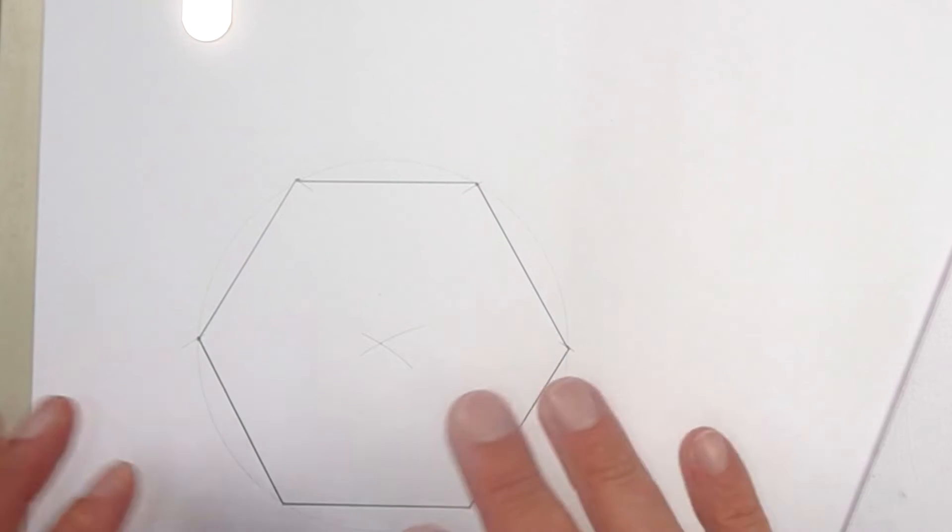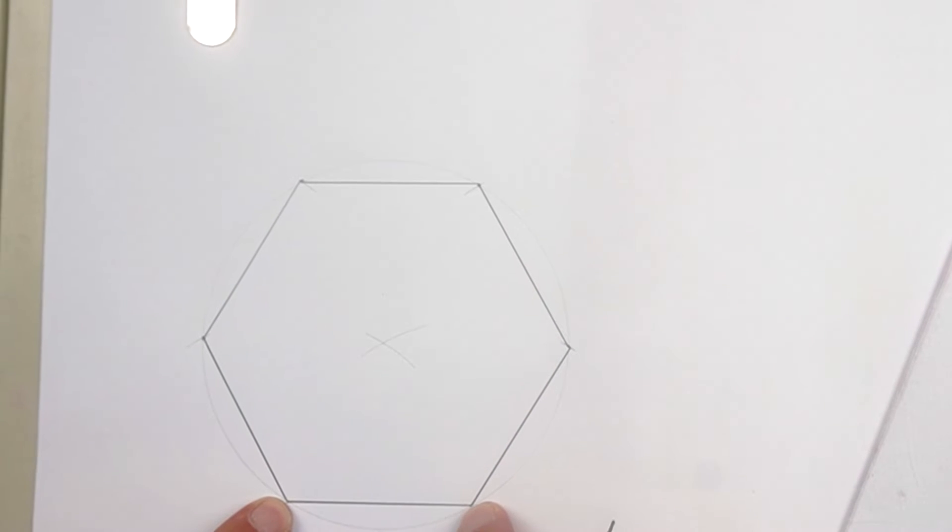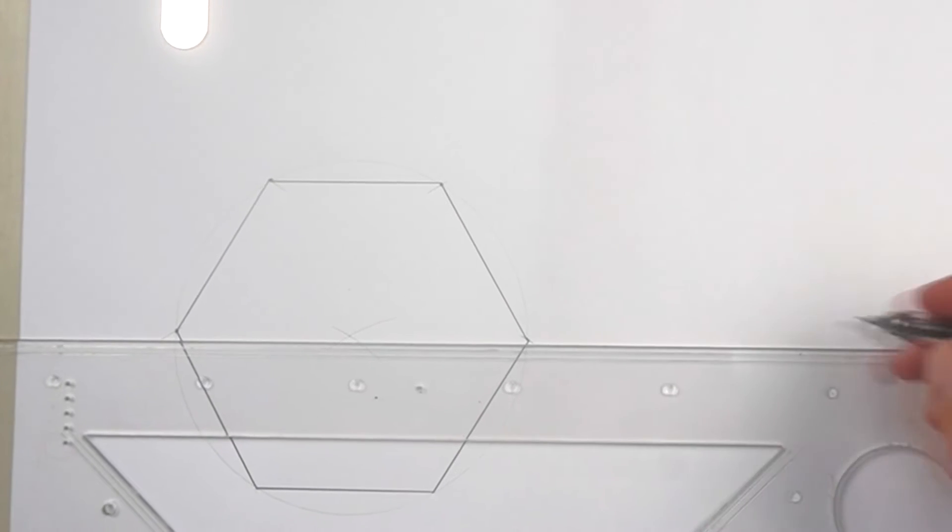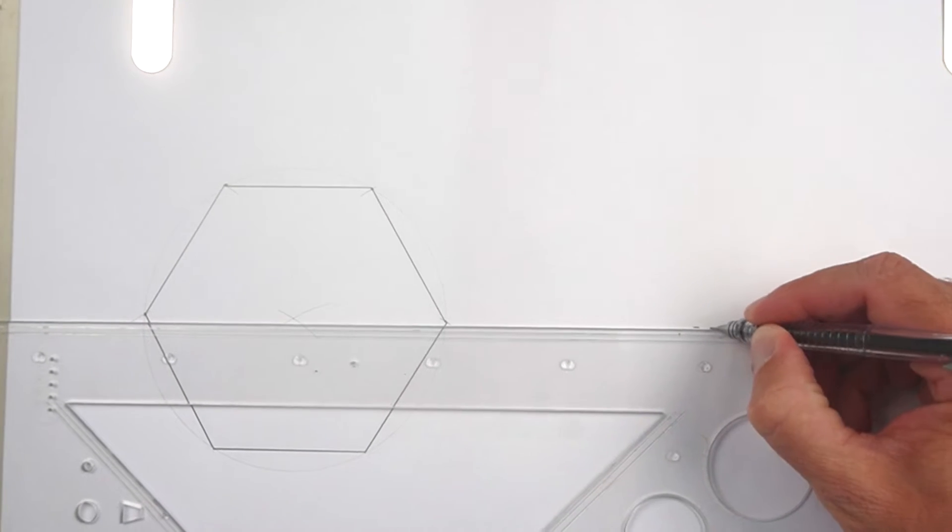That's our hexagon drawn when you have a base. Now let's say they give you another option: the center. Let's draw a center line here quickly.